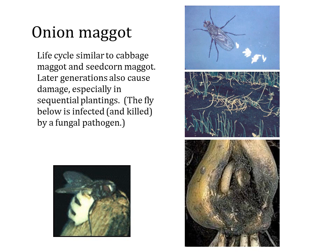The third is onion maggot, with a life cycle similar to cabbage maggot and seed corn maggot. This one can cause damage through the season — later generations as well as the first generation damage onions, especially with sequential plantings. Interestingly, all of these insects are subject to infection by a fungal pathogen that kills them. You'll sometimes see them hanging on tops of onions or grasses with spores coming out of their bodies.